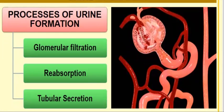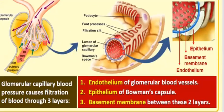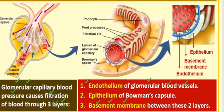In glomerular filtration, the blood is filtered, leaving all the macroparticles behind. The glomerular capillary causes blood pressure which initiates the filtration. This involves three layers: the first is the endothelium of the glomerular blood vessel, the second is the basement membrane between these two layers, and the third layer is the epithelium of the Bowman capsule.